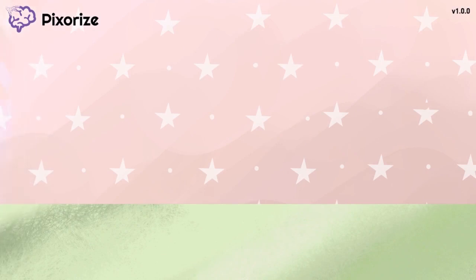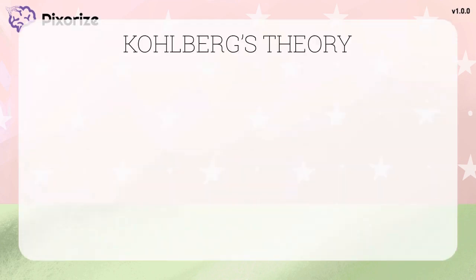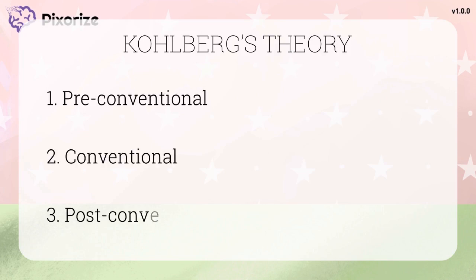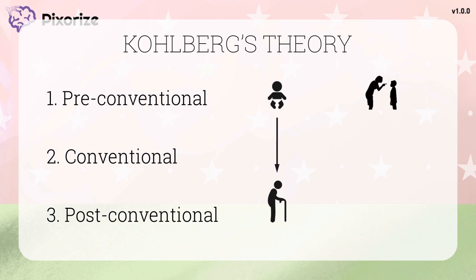Let's quickly review Kohlberg's theory of moral development. Lawrence Kohlberg proposed that moral development in people progresses through three levels in order: pre-conventional, conventional, and post-conventional morality. In general, people progress through these stages as they get older. As we advance through the stages, our moral compass evolves from relying on external cues like punishment towards internal principles like justice.